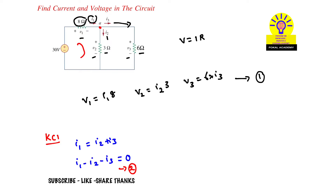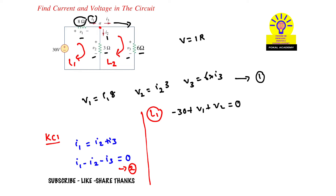Now observe the circuit — there are two loops: Loop 1 and Loop 2. Write KVL for each loop. For Loop 1, the sum of all voltage drops equals zero: −30 + V1 + V2 = 0. This is Equation 3. Substituting V1 = 8i1 and V2 = 3i2 from Equation 1 into Equation 3, we get: −30 + 8i1 + 3i2 = 0.